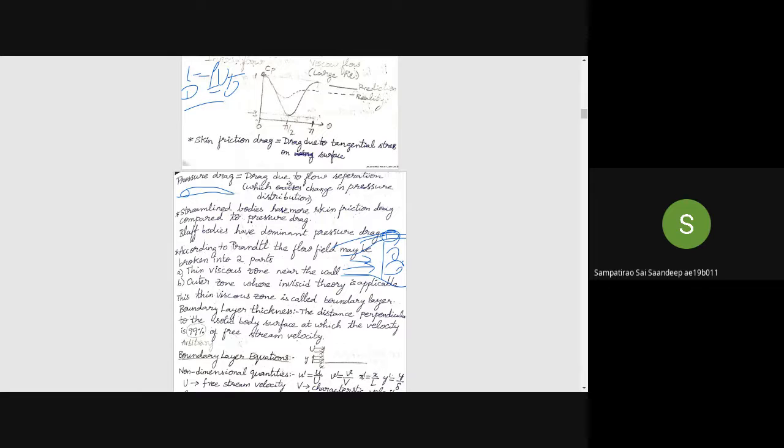According to this, we developed viscous flow theory as Prandtl described. Prandtl said that the flow field can be divided into two parts: a thin viscous zone near the wall...